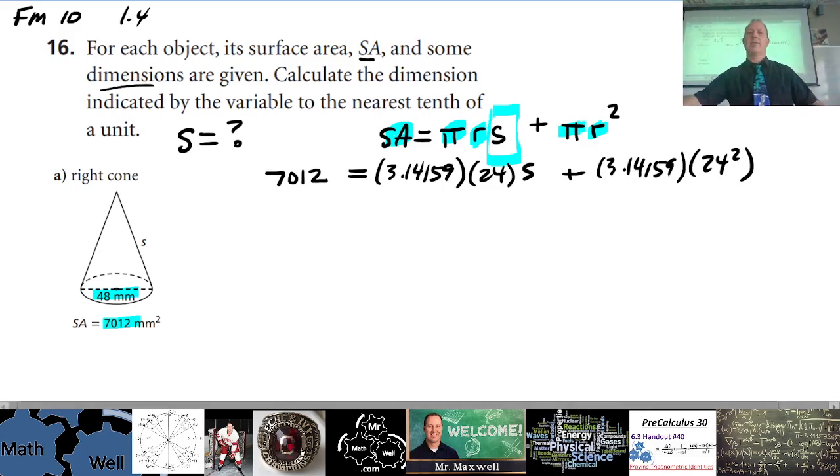we have to isolate for s. This is your basic algebra. We want to get this all by itself right here. How do we do that? Well, we are going to subtract this right here, we're going to subtract this value from both sides.